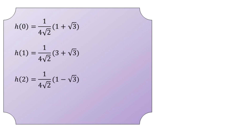The last coefficient H(3) is (3 − √3) / (4√2). By the use of these four Daubechies wavelet coefficients, we have the expression for the scaling function.